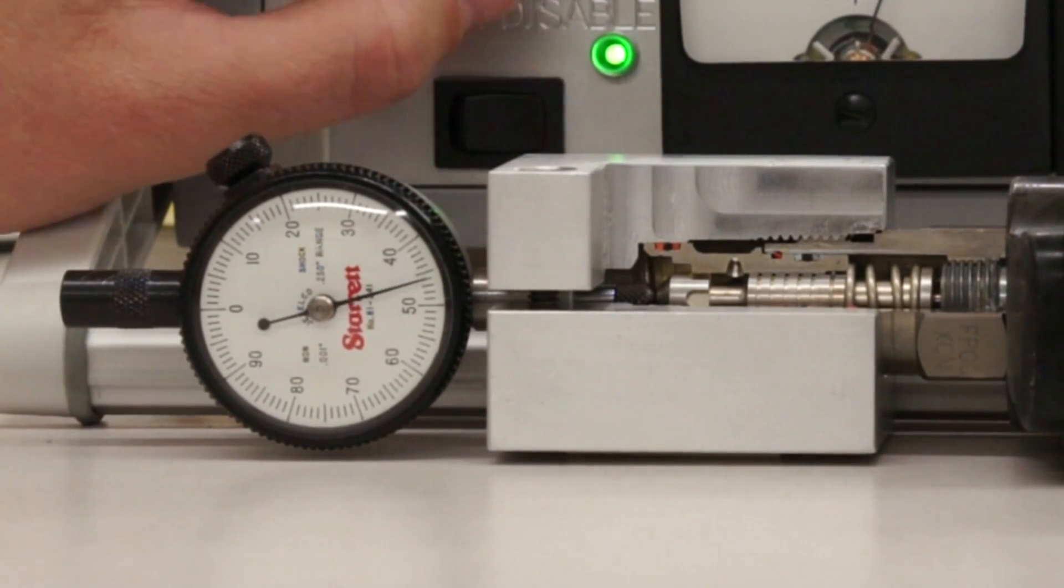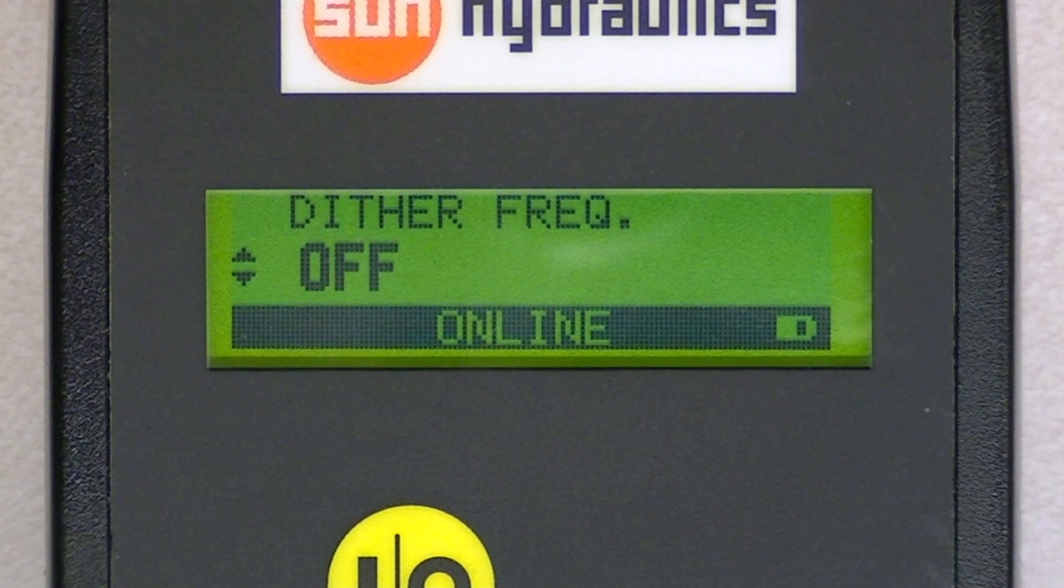When the dither frequency is turned off, it is actually set to a thousand Hertz. This setting is so high the valve won't respond to it.